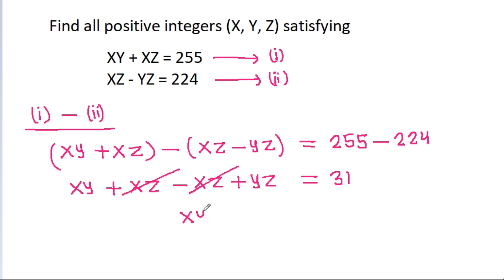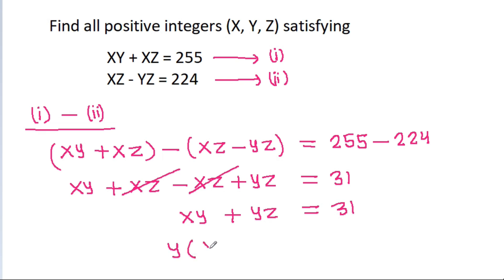So xy - yg = 31, and here we can take y common, giving y(x + g) = 31. Note that 31 is a prime number.